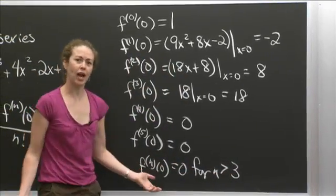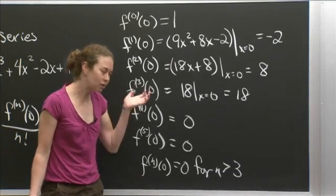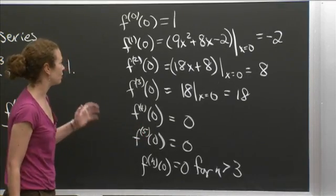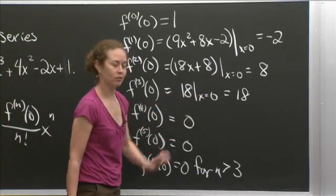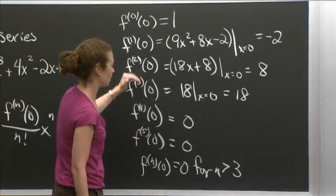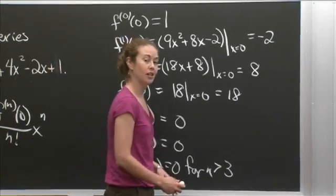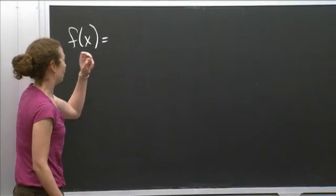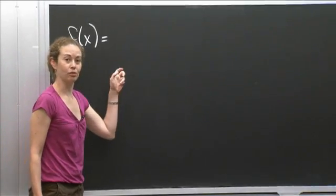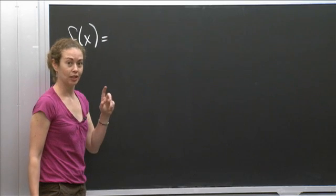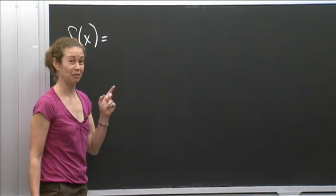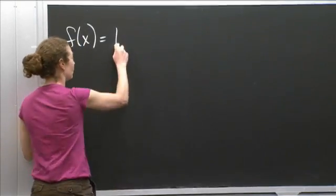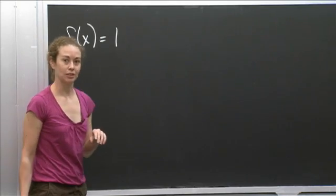So it looks like we should only have four terms in this. That maybe seems a little weird, but let's keep going and see what happens. Let's start plugging things in. So again, let's remember the formula. I'm going to start using that formula and these numbers. The first term is the function evaluated at 0 divided by 0 factorial times 1. 0 factorial is 1, so it's just the function evaluated at 0 times 1. The function evaluated at 0 we said was 1, so that's the first term in the Taylor series.